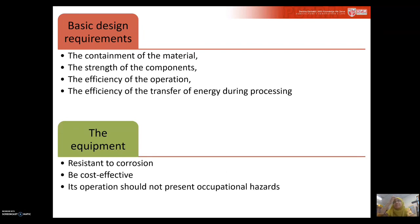This is among the basic design requirements. The basic design requirement for food equipment is basically to ensure containment of the materials that you process, then you look at the strength of the components, the efficiency of the operation, and the efficiency of the transfer of energy during processing. Another aspect we need to look at for the equipment is how robust the equipment is — how reliable it is in terms of resistance to corrosion.